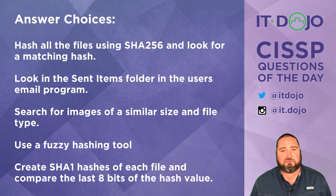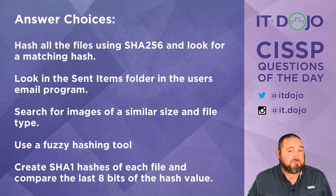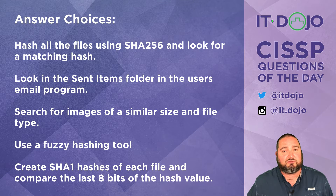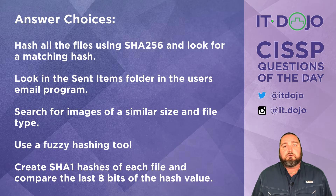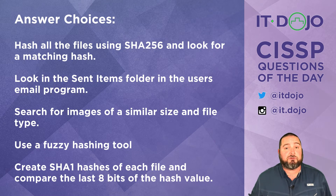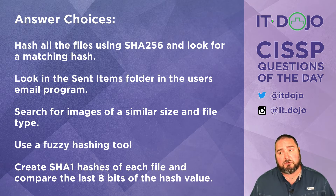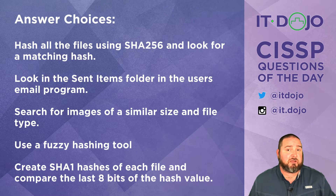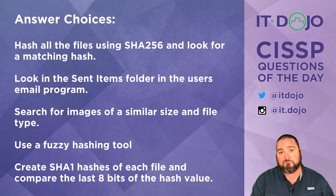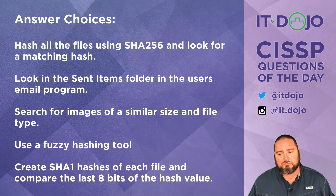Give those answer choices a read and give it some serious thought, because this may not be something that's addressed in a lot of CISSP books. The first answer choice says you should hash all the files on the computer using SHA-256 and then look for matching hashes. The problem is that the beachweek.jpg file is the one he's looking for. Because it was modified in a slight way, we're going to get a radically different hash than the original vacation.jpg. The hashes are very different of the two files.